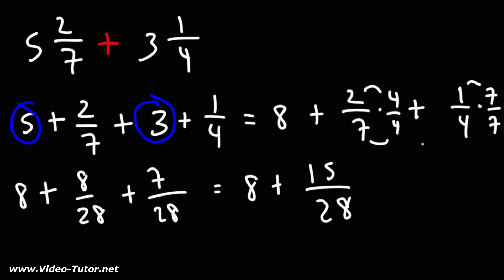Once we have a whole number plus a fraction, we can now write that expression as a mixed number. So the answer is eight and fifteen over twenty-eight.